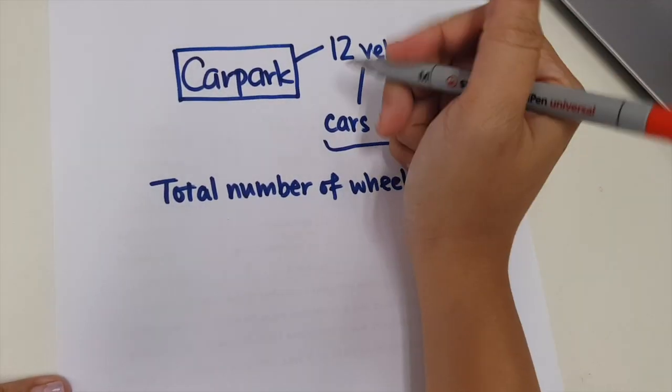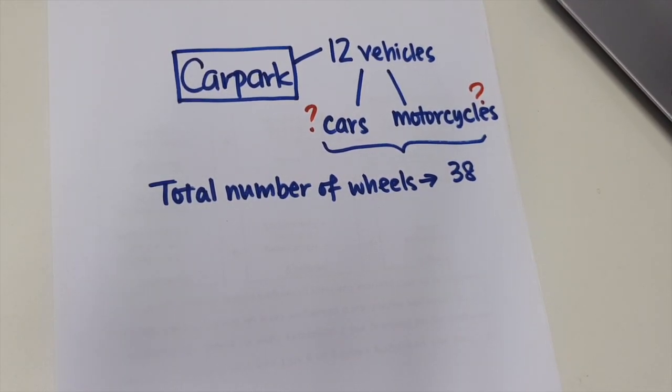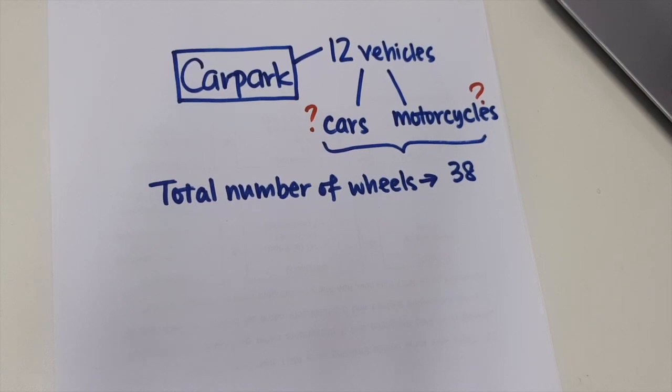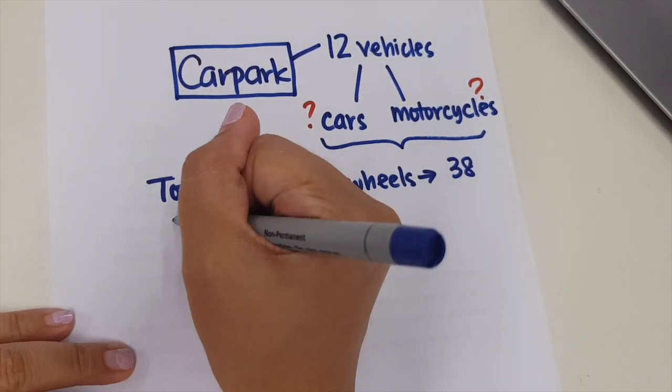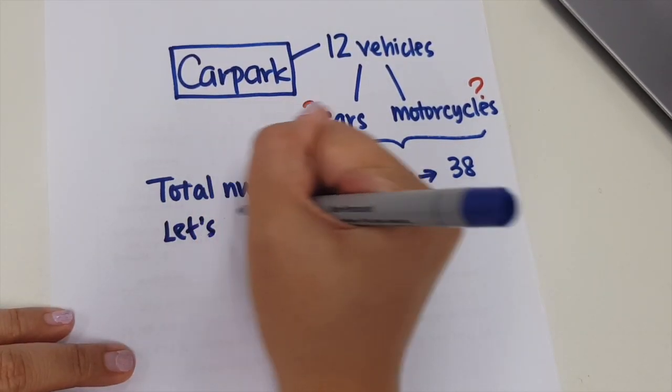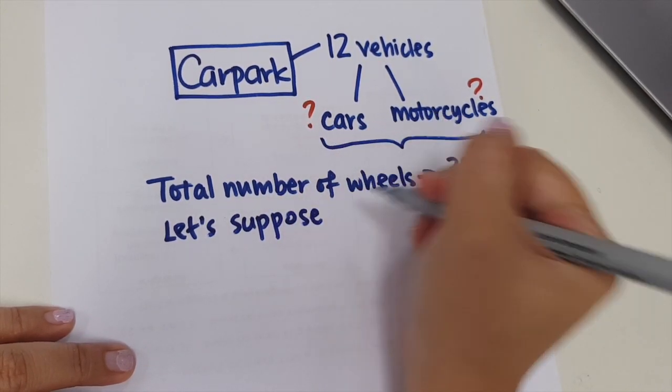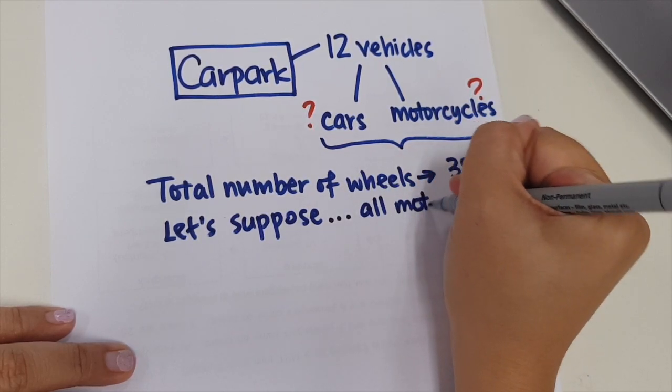So let's look at this question. In a carpark, there are 12 vehicles and a total of 38 wheels. We don't know how many cars and how many motorcycles are there, but we know that the 12 vehicles only include cars and motorcycles. So how can we find out how many cars and how many motorcycles are there, knowing that the total number of wheels is 38?